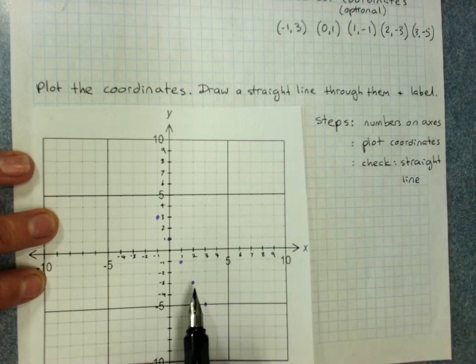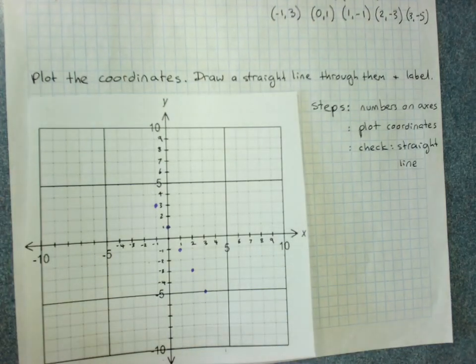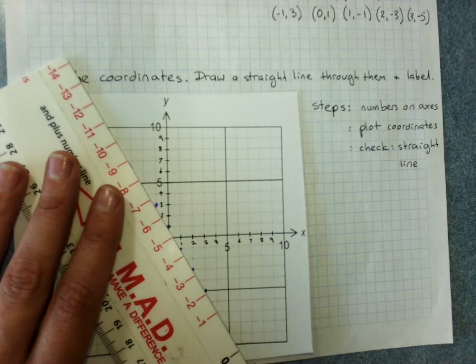Check they make a straight line. If one of them is out, it means that one's probably wrong. They should make a straight line. Then, yes they make a straight line.